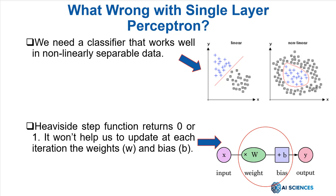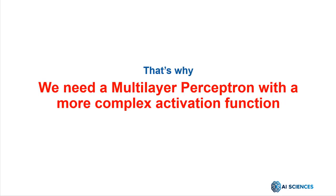To work with non-linearly separable data, the single layer perceptron and the heaviside step function are useless. We need to have multiple layers that consist of several perceptrons along with a non-linear activation function. In addition, the neural network's weights and biases need to be updated at each iteration so that the model can produce a prediction as close as possible to the real value. Having a function that can only generate either 0 or 1 won't help us to achieve this objective easily. For all these reasons, we need a multi-layer perceptron with a more complex activation function.